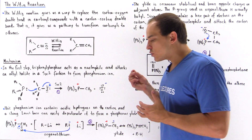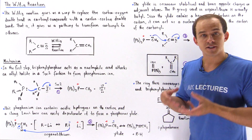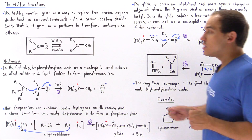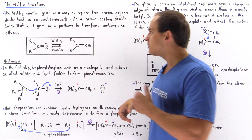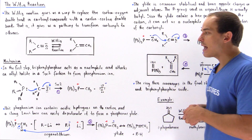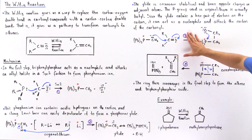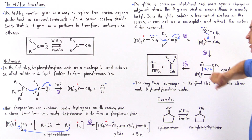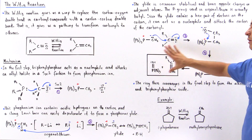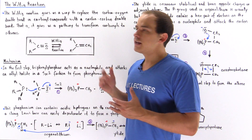In summary, the Wittig reaction is a reaction between a nucleophile called the phosphorus elide and a carbonyl group, allowing us to replace the carbon-oxygen double bond with a carbon-carbon double bond. The first two steps involve formation of the phosphorus elide, which then reacts with the carbonyl to form an unstable four-membered ring, which breaks down to give two thermodynamically stable products: triphenylphosphine oxide and the alkene.